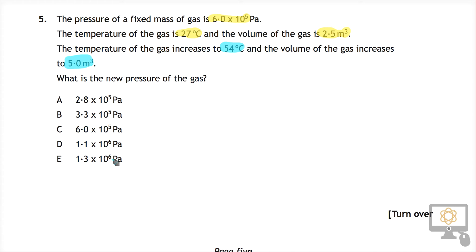We know this is a question relating to the gas law, and the formula is PV/T is a constant. We can write that as P₁V₁/T₁ equals P₂V₂/T₂.